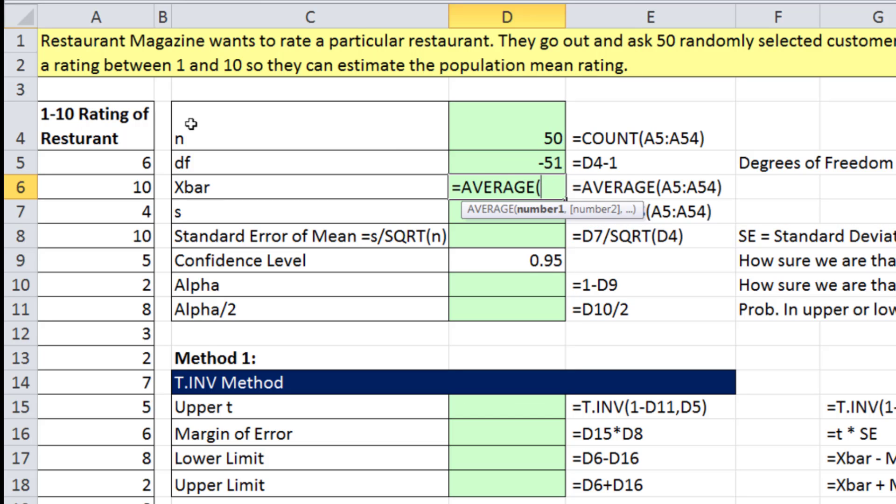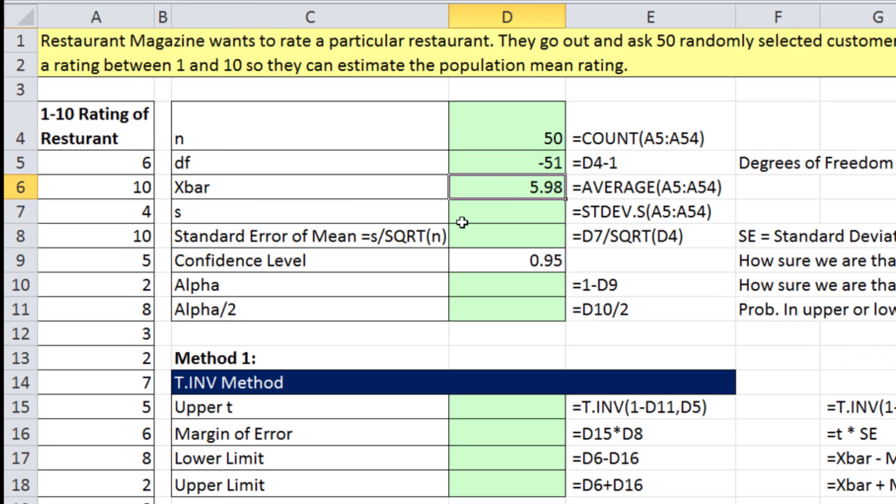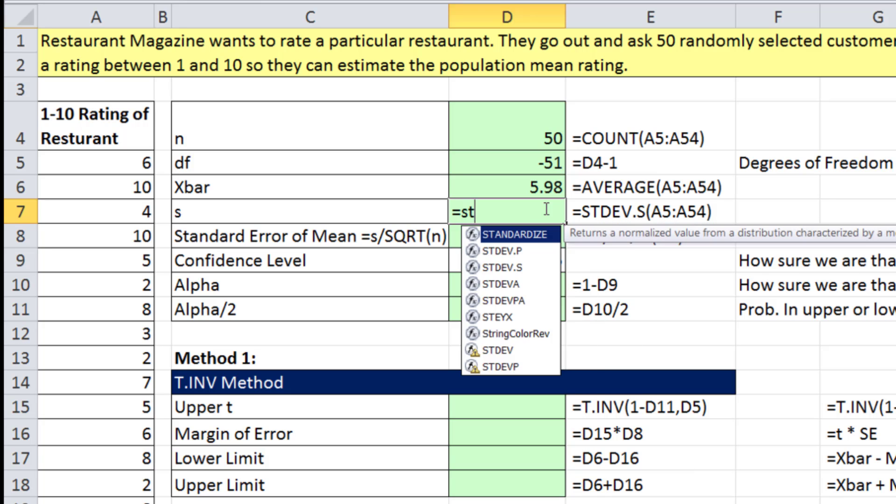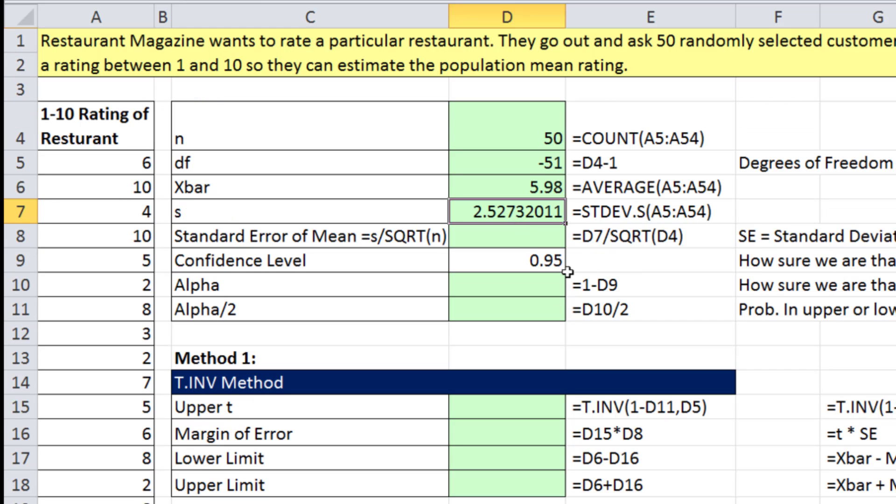Count counts numbers. We'll calculate the degrees of freedom. So we take our n minus the number of samples. Our x bar, 5.98. So that's the average rating, the standard deviation. It's stdev.s, control, shift, down arrow. So 2.52. We'll calculate our standard error equals our s divided by square root of our n. All right, and we have a 95% confidence interval. So we'll say equals 1 minus. I guess all the examples I picked were 95. They're not always that way. 99 is common, 90 sometimes. All right, and then alpha divided by 2.